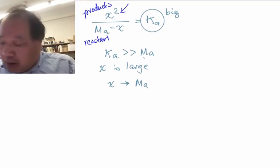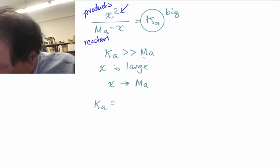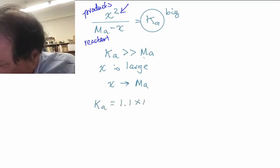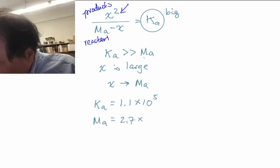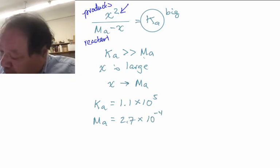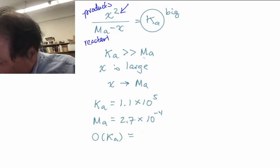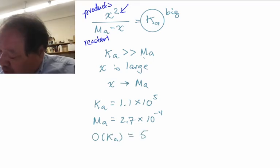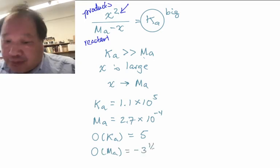Now let's consider an example with some numbers. Let's consider Ka is a big number, 1.1 times 10 to the fifth. Ma is going to be a small number, we'll make that 2.7 times 10 to the minus fourth. We're interested in orders of magnitude. The order of magnitude of Ka, since it's 1.1 times 10 to the fifth, is 5.